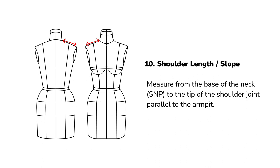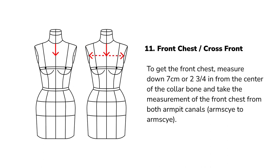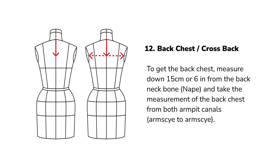Shoulder length or shoulder slope: measure from the base of the neck, the shoulder neck point, to the tip of the shoulder joint, parallel to the armpit. Front chest or cross front: begin 7 centimeters down from the center of the collarbone and measure across from both armpit canals. Back chest or cross back: start 15 centimeters down from the back neck bone or nape and measure across from both armpit canals.